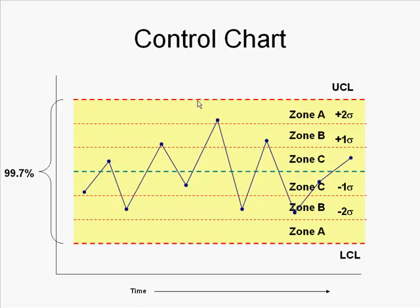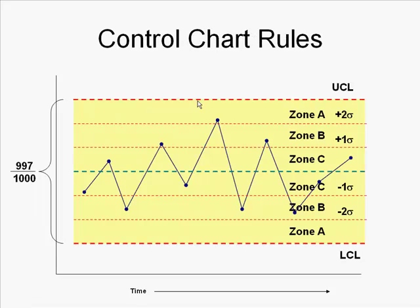Now, this enables us to do some analysis and figure out is there something potentially out of control or out of whack with our process. So as you can see here, 99.7% means 997 points out of 1,000 should fall in here. Maybe only three points should fall outside of that control limit.